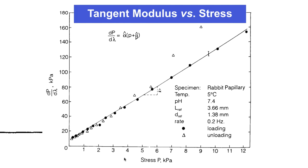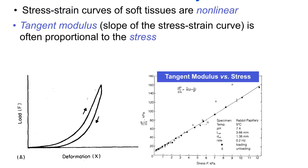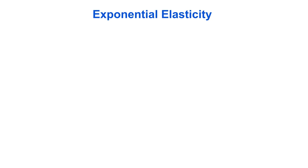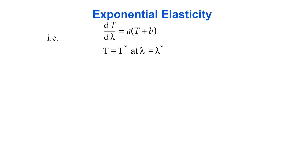The tangent modulus is linearly proportional to the stress. This observation means that the slope, dT/dλ, can be written as a linear function of the stress. To integrate this first-order ordinary differential equation, we need a boundary condition to solve for the constant of integration. Let's assume that at one particular known stretch ratio, lambda star, the stress is t star. The typical condition applied is that when lambda star is 1, namely when there is no strain, t is 0.